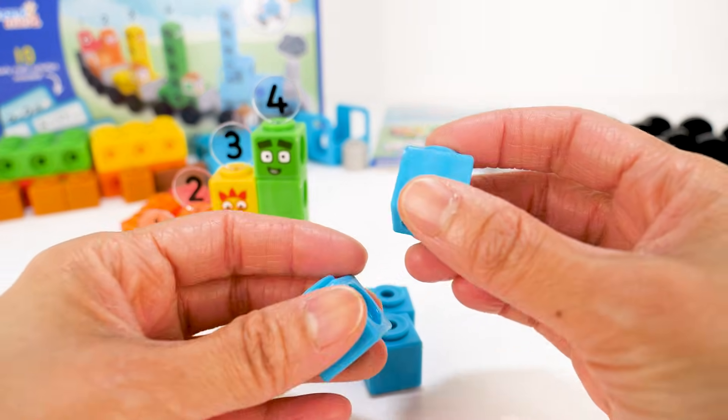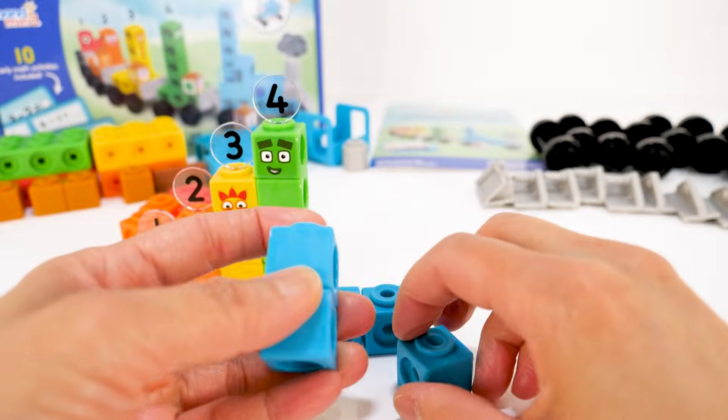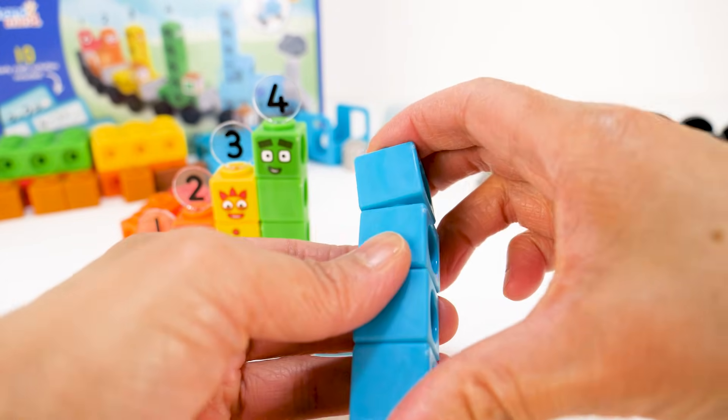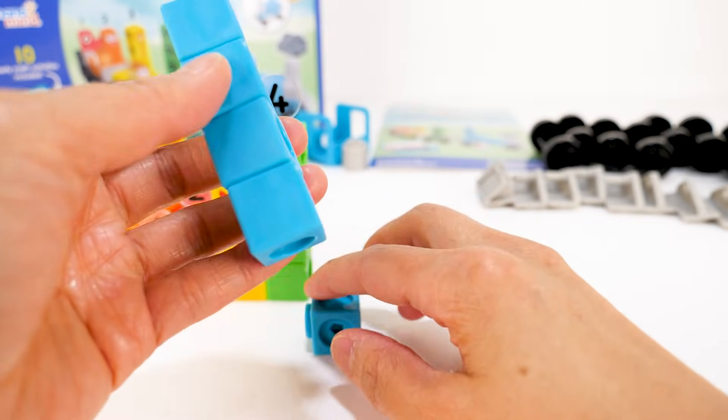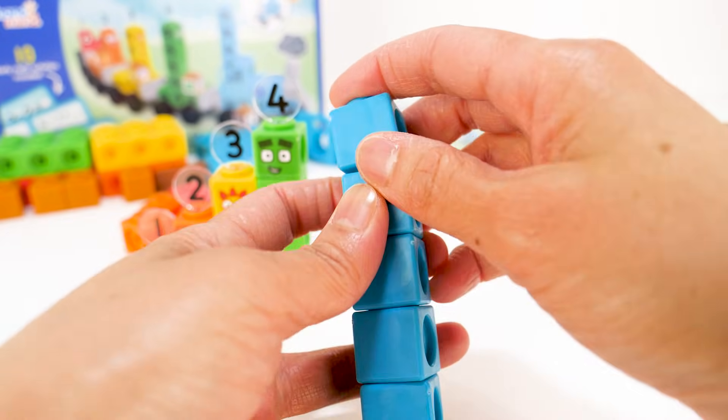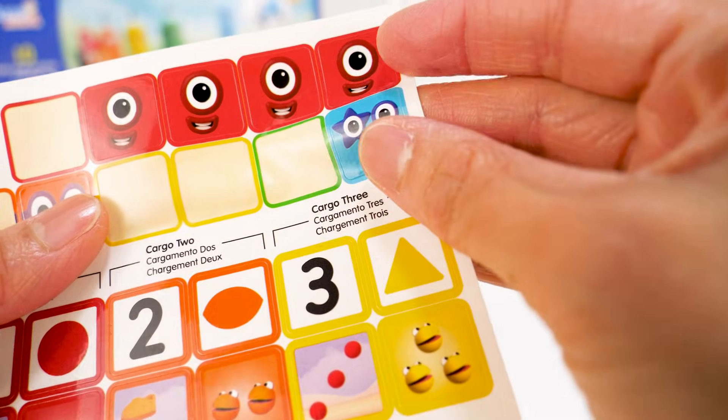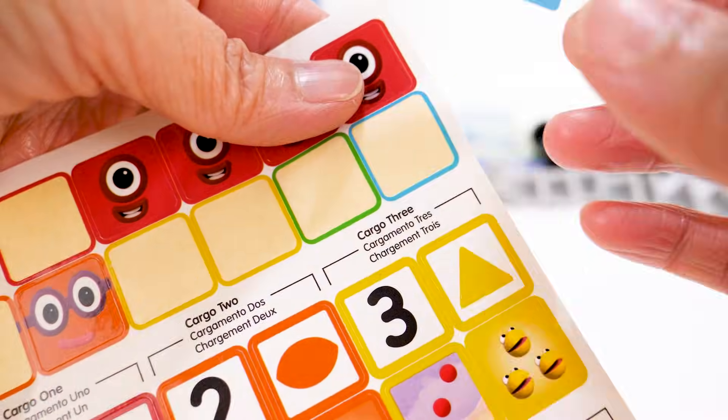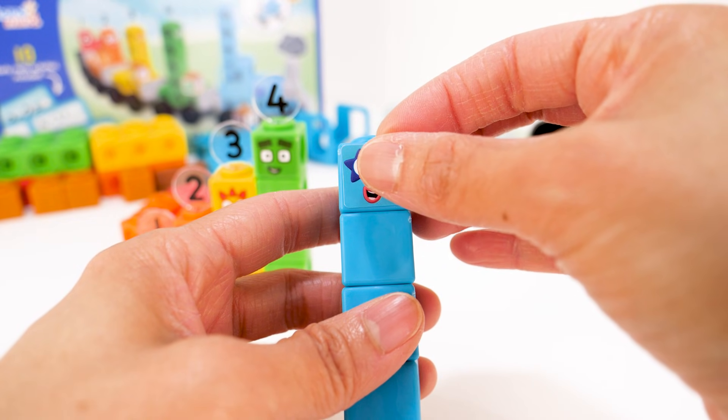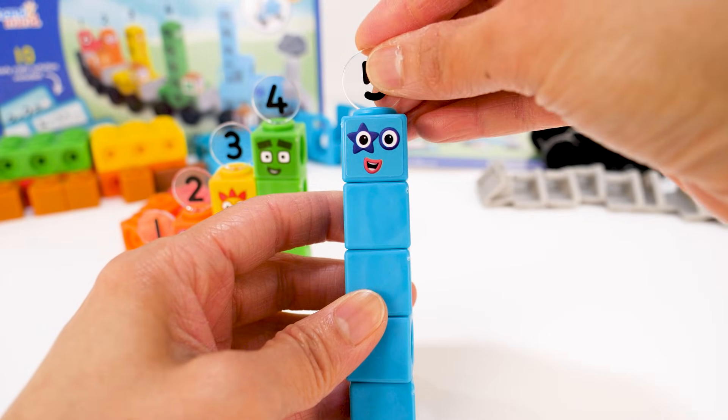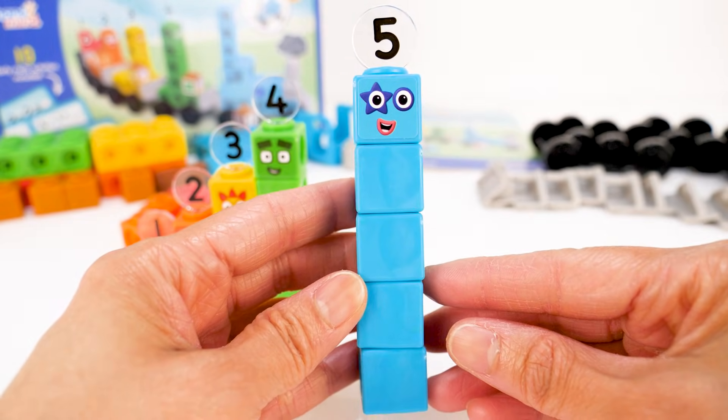The last number block to build is number block 5. A face sticker for number block 5. And then her numbering. Number block 5.